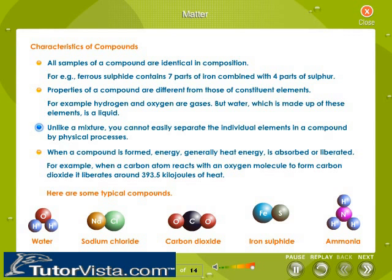Unlike a mixture, you cannot easily separate the individual elements in a compound by physical processes. When a compound is formed, energy — generally heat energy — is absorbed or liberated. For example, when a carbon atom reacts with an oxygen molecule to form carbon dioxide, it liberates around 393.5 kilojoules of heat. Here are some typical compounds.